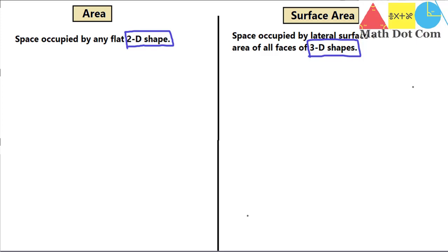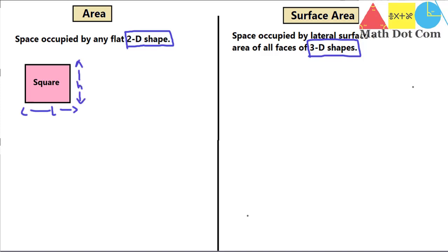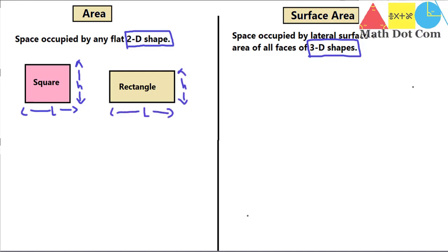Let's draw shapes for area. For example, this is a square — a 2D shape with length and height. You will be asked to find the area of the square. Another example of a 2D shape is a rectangle, which also has a length and height or width. Whenever you are asked to find the area, it is of 2D shapes: square, rectangle, circle — all shapes that are two dimensional.